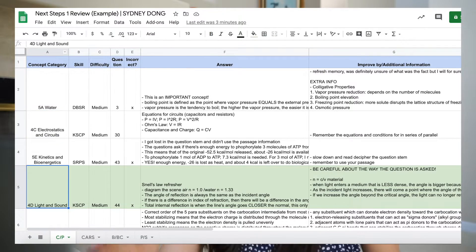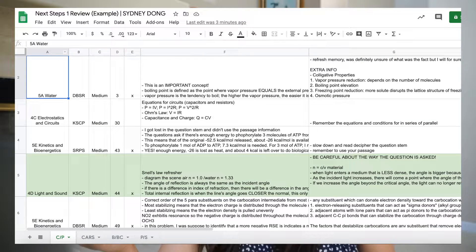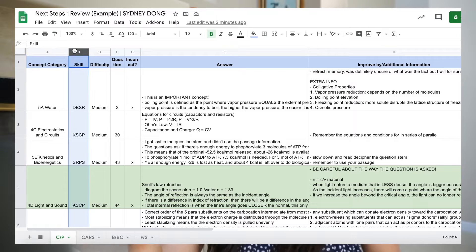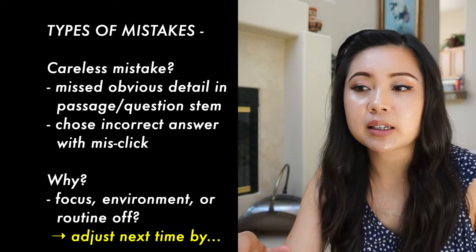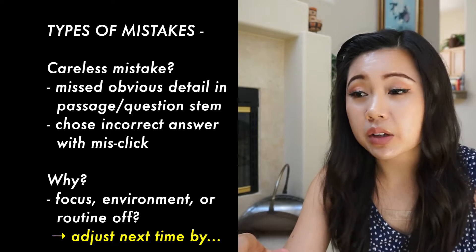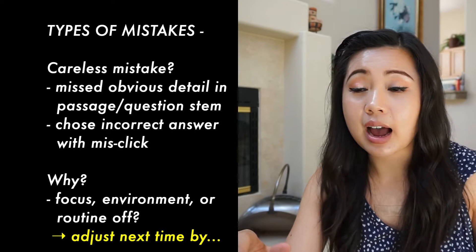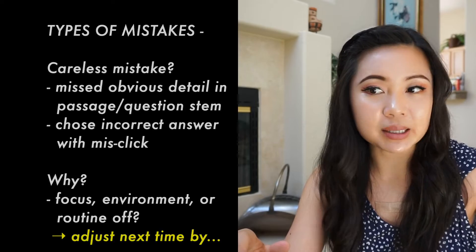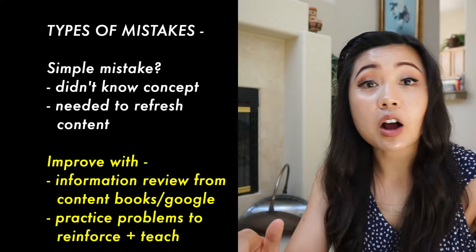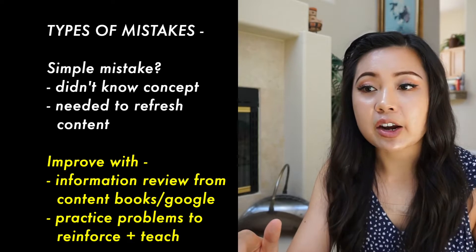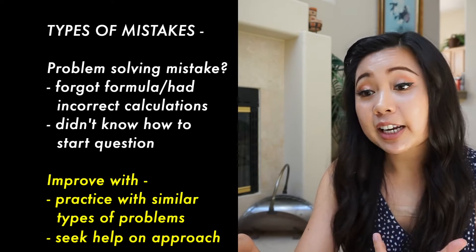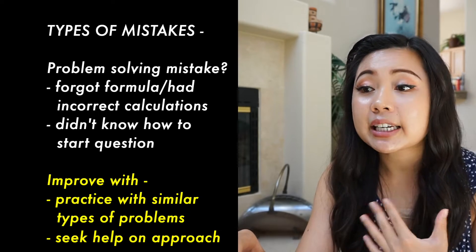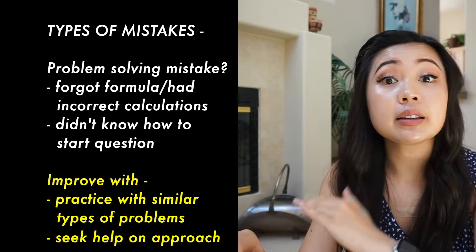Deep diving into each: for the concept category, this is where I would go back to the content chapter or use Google — Google became my best friend. For the skill column, filling this out was necessary for the beginning tests to identify specifically where I struggled. If it was a careless mistake, was my focus off? Was my environment not optimal, or was my routine off? This is just accountability to make sure I would not be in the same mindset to make the same careless mistake. If it was a simple mistake, it meant I straight up didn't know a concept, which told me I needed to review that content. To solidify it, I would speak it out loud or teach the concept to someone else. If I made a mistake due to problem solving, I would first identify what I needed to know and do as many practice problems as I could related to that type of problem.